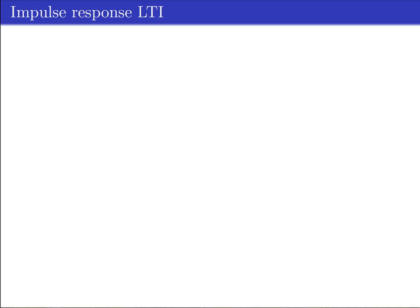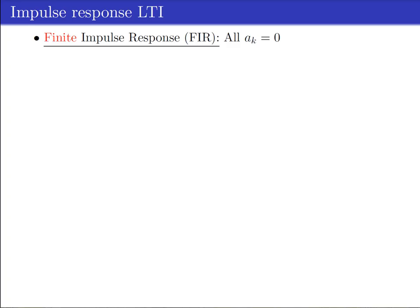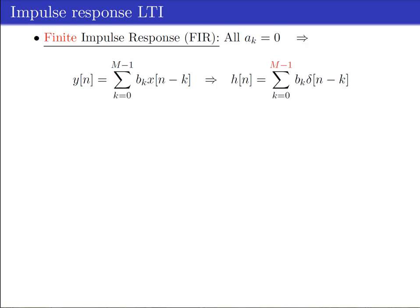In a previous video, we have shown that the impulse response completely describes an LTI system. In case all feedback coefficients are zero, the LTI system represents a finite impulse response filter. The difference equation is a finite sum of weighted and delayed input samples. The impulse response hn has finite length. Moreover, the m impulse response values h0 until hm-1 are the same as the m filter coefficients b0 until bm-1.